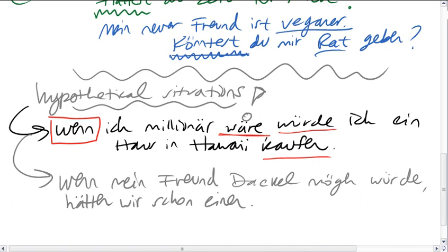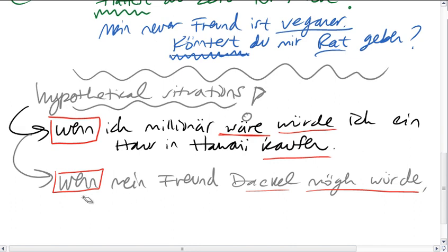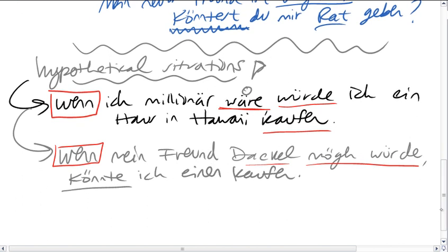So, what does this mean? Maybe you can translate. So, if my boyfriend would like dachshunds, we would already have one. Or we could revise that sentence actually to use one of our modal verbs in the following way. In a way that's also very true in my own life. So, wenn mein Freund Dachshund mögen würde, könnte ich einen kaufen. Oder könnte ich einen haben. Yeah, I could buy one. It's true. But now I can't, weil er die einfach nicht mag. So, is this making sense?